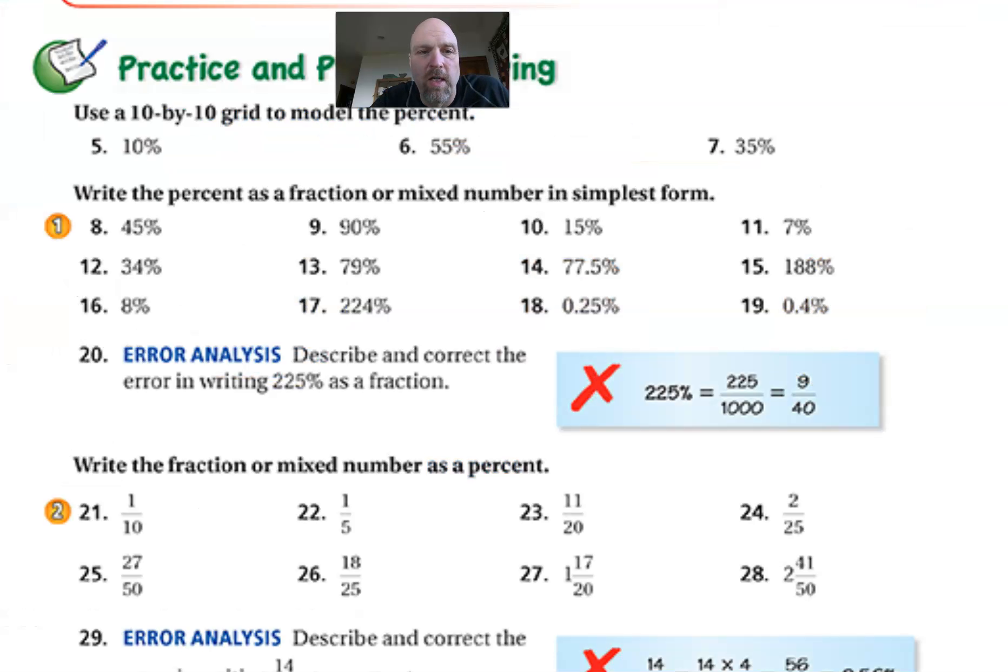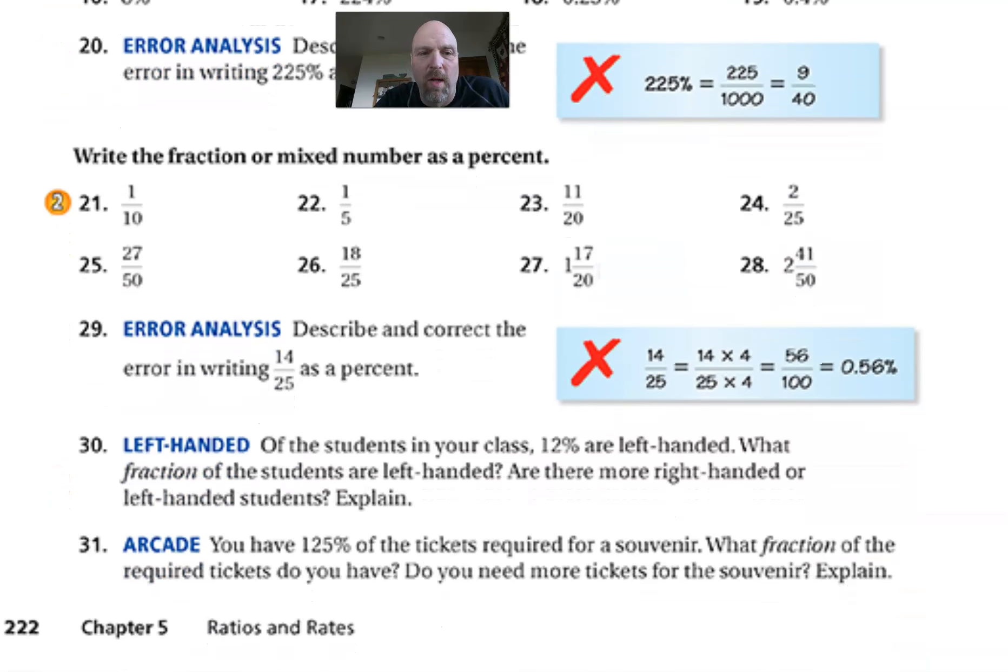So I'm going to run out of time here. I want to turn our attention to the exercises, things to watch out for. So you're going to model this percent, like nine, look, let's look at nine. 90% is nine tenths. It's nine out of 10. Seven percent is seven hundredths. I'm going to move the decimal place over two places. It's going to be 0.07. So those are pretty easy. I'm not worried about that.